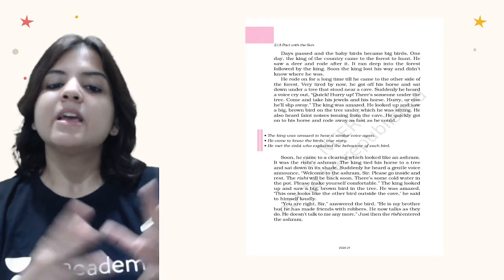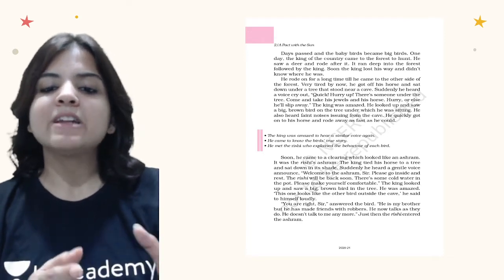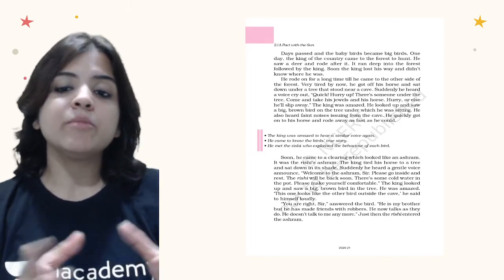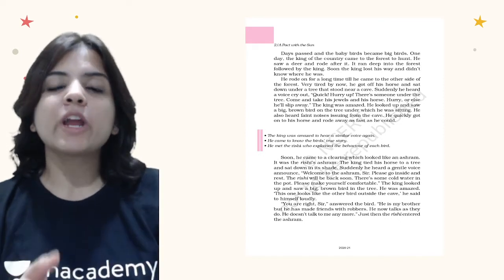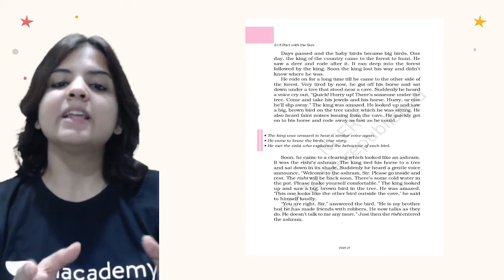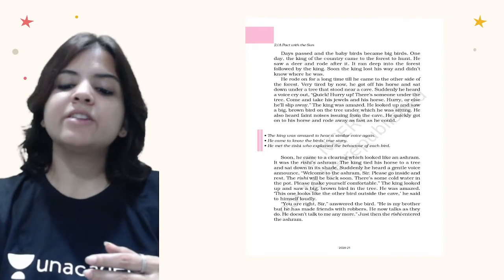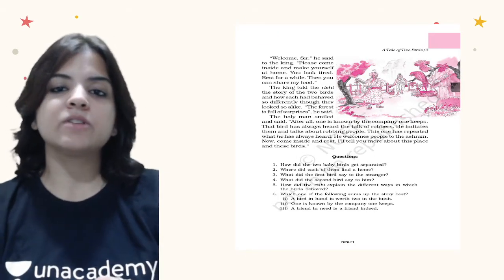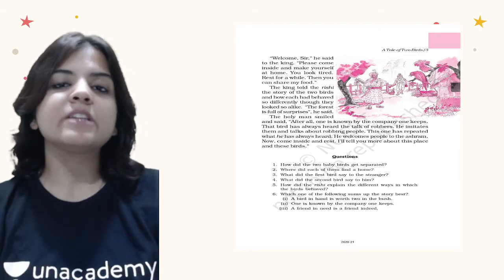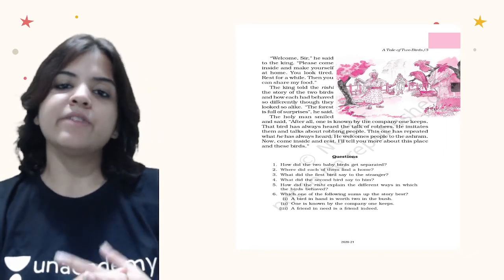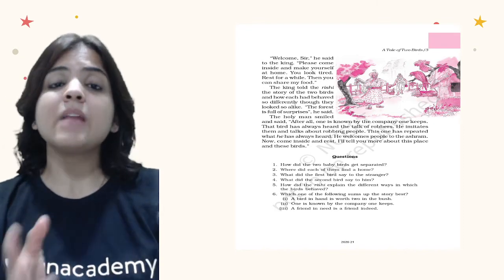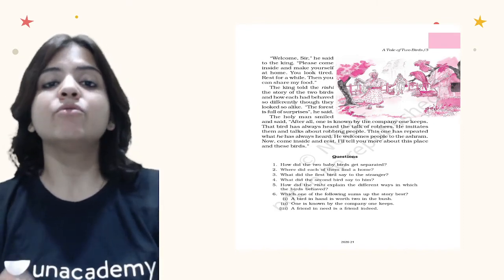'You are right, sir,' answered the bird. 'He is my brother, but he has made friends with robbers and he now talks as they do. He doesn't talk to me anymore.' The first bird had stopped talking to the second because they had become very different in characteristics due to the company they kept. Just then the Rishi entered the ashram. 'Welcome, sir,' he said to the king. 'Please come inside and make yourself comfortable. You look tired — rest for a while. Then you can share my food.' The Rishi was very helpful and offered the king his food.